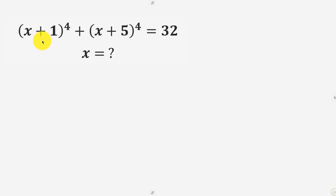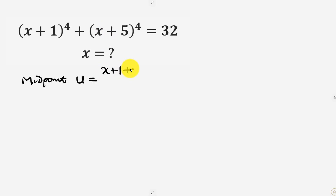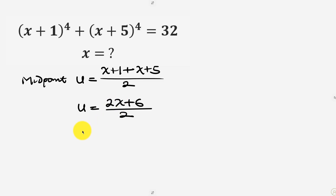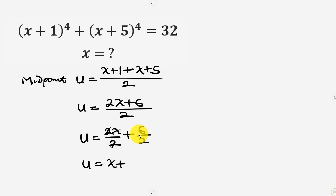Whenever we have an expression like this, the first thing we have to do is find the midpoint between x+1 and x+5. Let's call that midpoint u. We get it by adding them: (x+1 + x+5) / 2. That gives us (2x + 6) / 2, which simplifies to x + 3. So our midpoint u is x + 3.